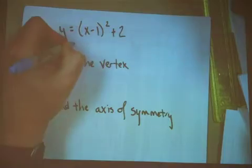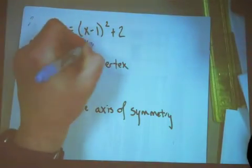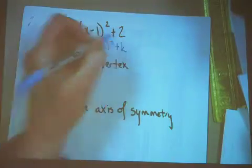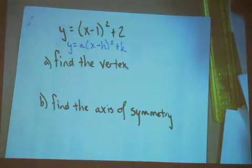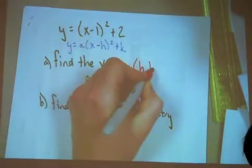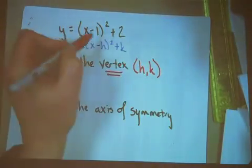Here's a parabola given in the vertex form, and we need to find the vertex and the axis of symmetry. Remember that the general form is y equals a times the quantity x minus h squared plus k. The vertex is the coordinate pair (h,k).